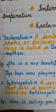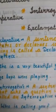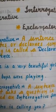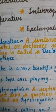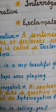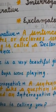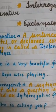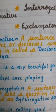Next is the interrogative sentence. A sentence that asks a question is called an interrogative sentence. For example: 'Who is calling you?', 'What is your name?', 'Where do you live?', 'What are you doing?', 'Why are you not going there?' — in all these sentences we are asking questions.